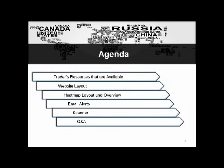The agenda for today is split into five main areas. First, we'll talk about the resources available for traders on the website — what the resources are, what symbols we're scanning, what markets we're supporting. Next, we'll go over the website layout, since we've undergone a website change. Third, we'll go through the heat map, talk about the color code, the number system, and exactly how they relate to a wave pattern — for trend traders, counter trend traders, and aggressive traders looking for overbought or oversold conditions.